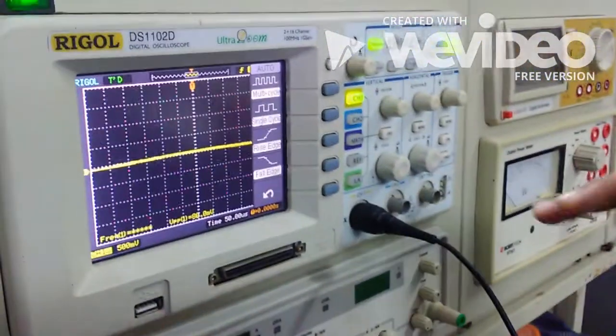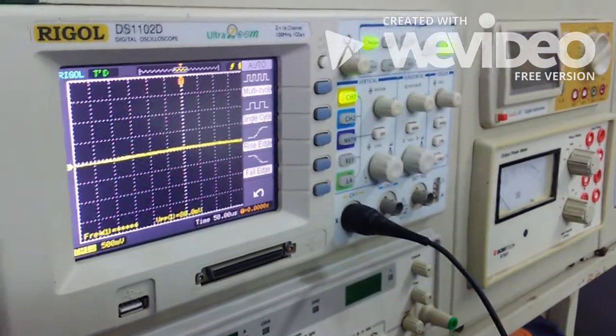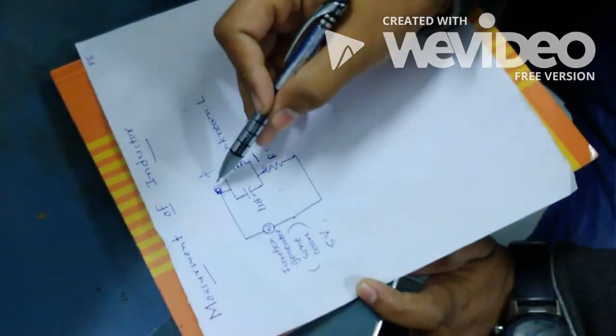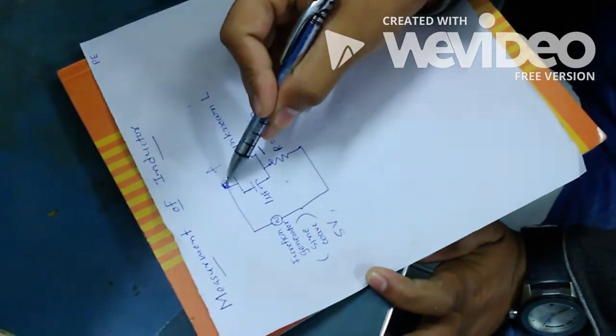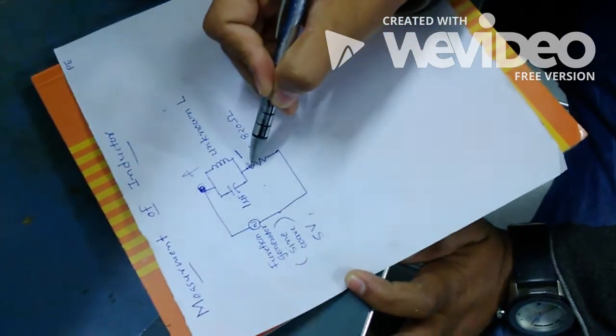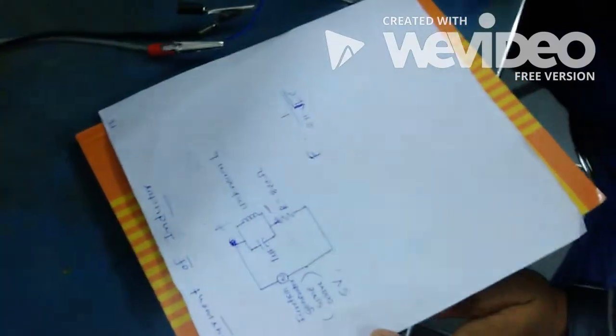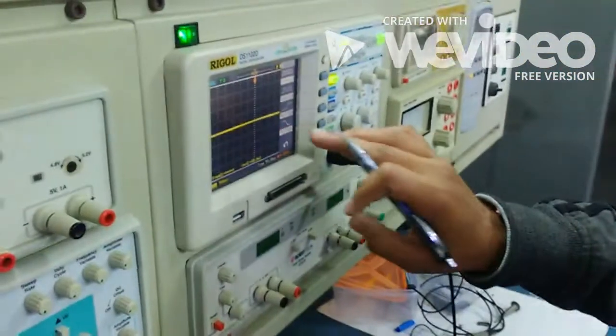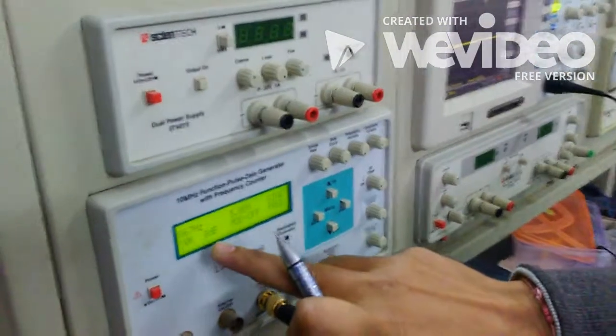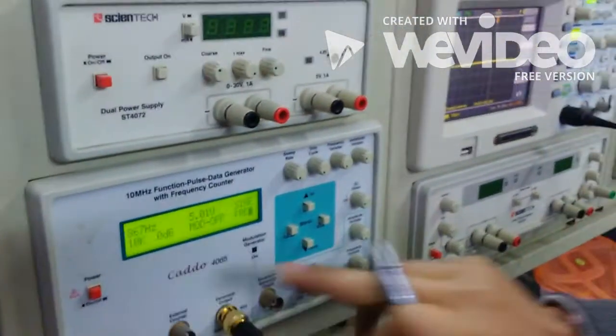What we have to do is measure the response of the circuit from here to here. This is the CRO response of the circuit when the frequency is approximately 1 kilohertz.